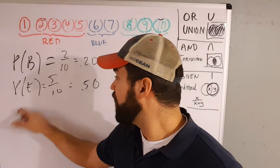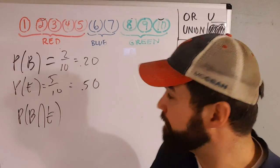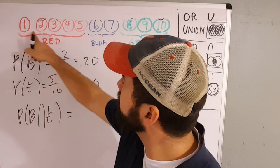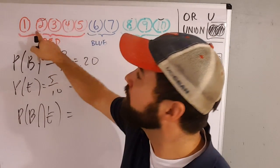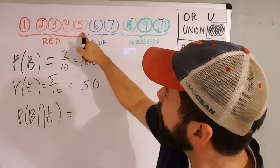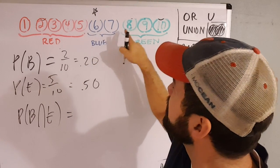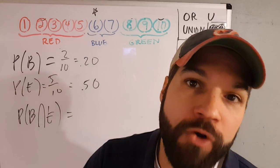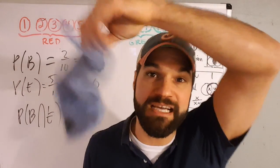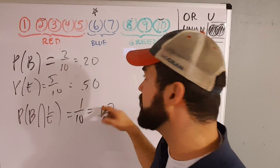So if I'm wondering about the likelihood of being blue and even at the same time, let's see what it is. Which ones are blue and even? Going through them: that's even but not blue, even but red, odd, even and blue — there it is. Only one of them is both blue and even: 1 out of 10. So the likelihood of reaching in and grabbing one that's blue and even is 1 out of 10, a 10% chance.